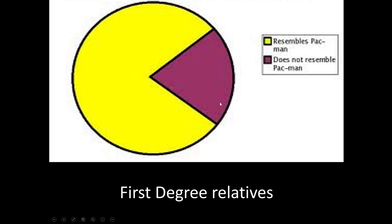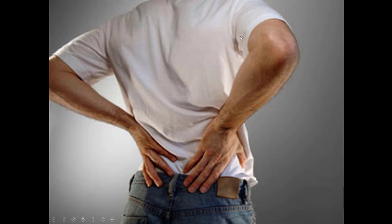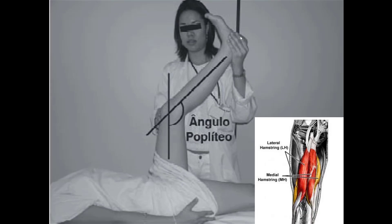First-degree relatives have a 25% incidence — if a first-degree relative has the same problem, you have a very high chance of getting it. About 4% of these fractures slide, which can be more of a problem, and that's called spondylolisthesis. It usually presents as back pain. Sometimes the nerves are tight and patients have hamstring tightness — on physical exam, when you lay the patient flat and raise the leg, most children can get the knee totally straight, but hamstring tightness can be a sign of nerve root tension.